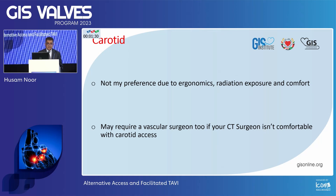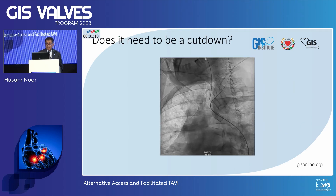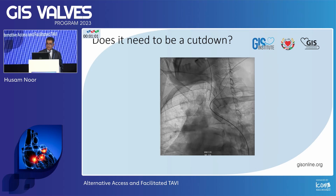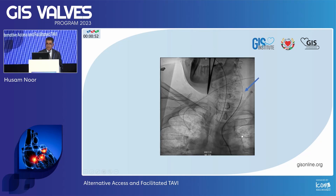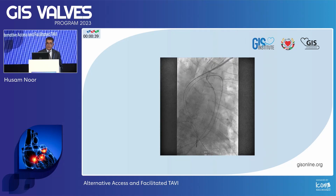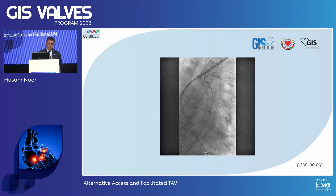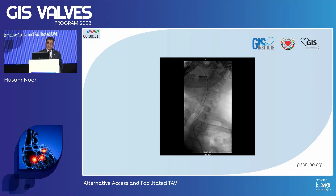I haven't done any carotid access myself, so that's not my preference due to lack of exposure, ergonomics, and personal experience. You may require a vascular surgeon if your CT surgeon is not comfortable. However, colleagues at the University of Washington perform percutaneous transcarotid: they take a selective injection to the transcarotid, perform percutaneous access, the wire goes down, and they place a Swan-Ganz balloon-wedge catheter in the carotid — making sure the contralateral carotid is open, as a poor man's distal protection device. TAVI is then performed and closure is with a Perclose device.